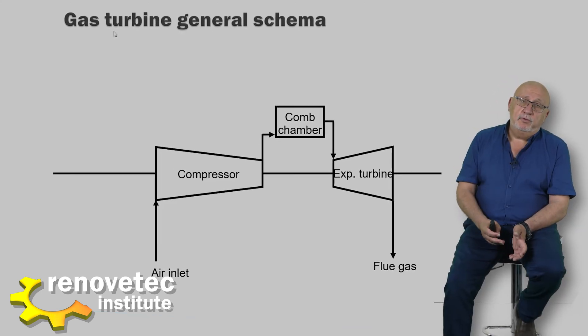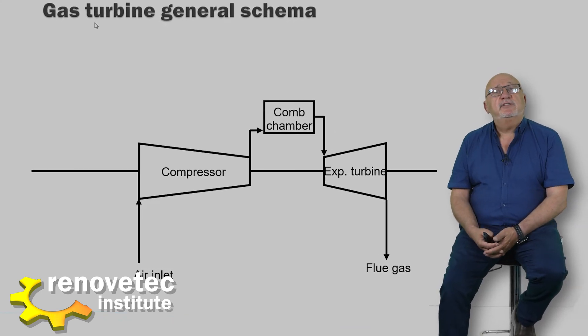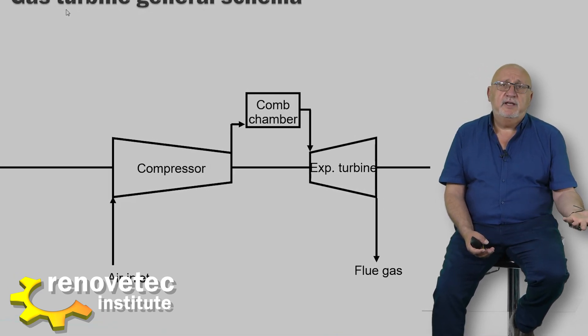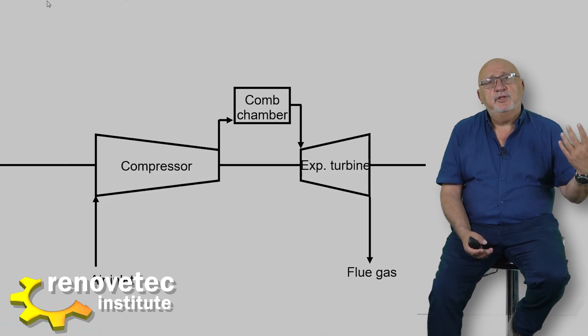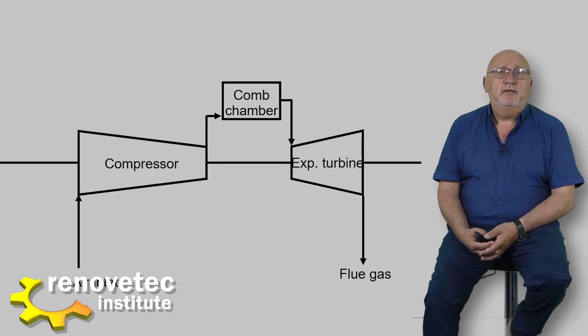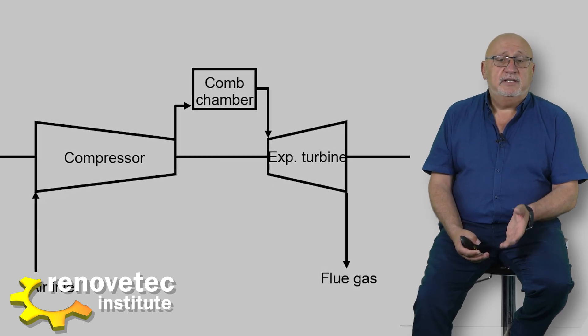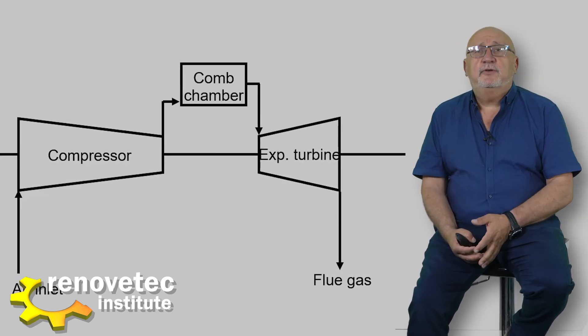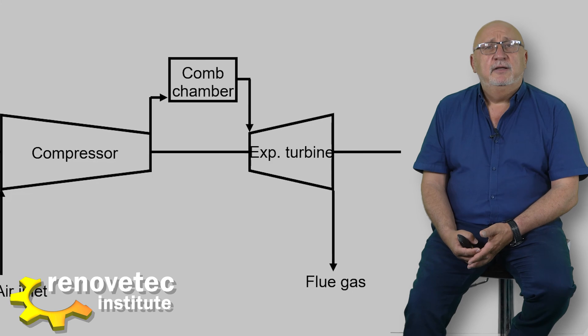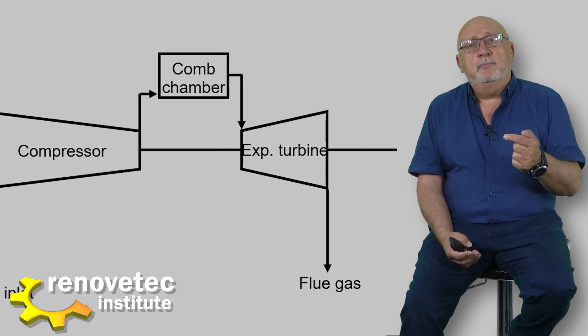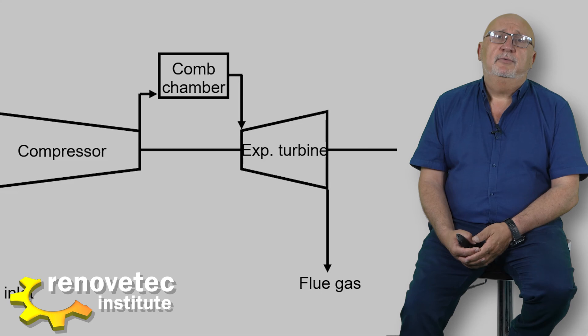In the compressor, we increase the pressure of the air. We receive the air at ambient temperature and ambient pressure, and we compress this air. That means that at the outlet of the compressor, we have air with more pressure and more temperature than at the inlet. Normally it is an axial compressor, and inside the compressor we increase the pressure step by step.